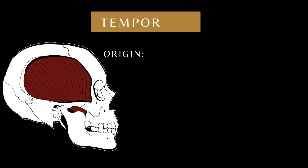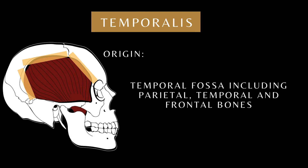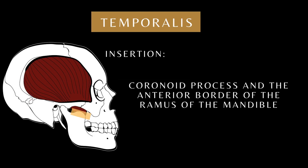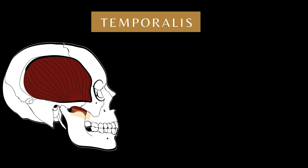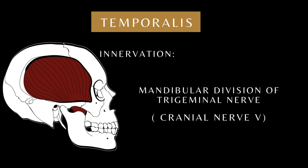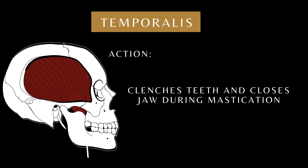Temporalis: its fibers arise from the temporal fossa, including the parietal, temporal, and frontal bones. Temporalis inserts into the coronoid process and the anterior border of the ramus of the mandible. It is innervated by the mandibular division of the trigeminal nerve. Its main action is to clench the teeth and close the jaw during mastication.